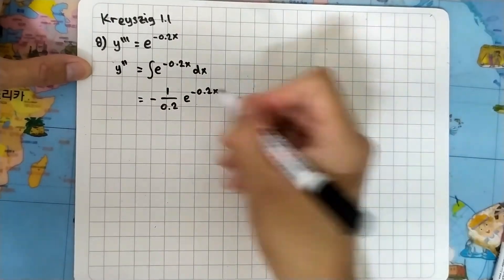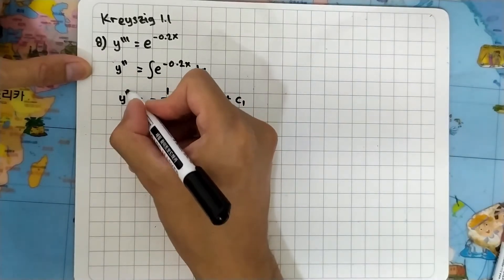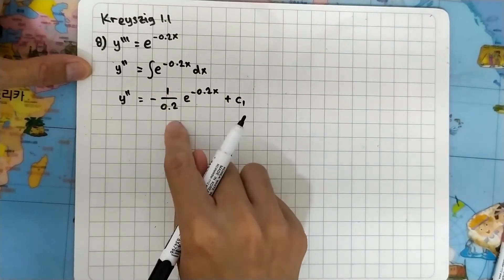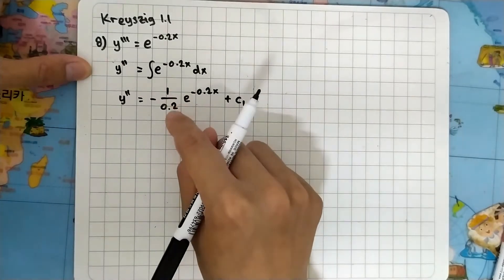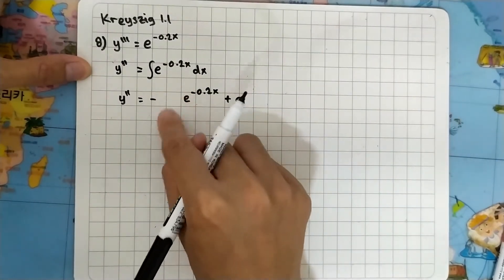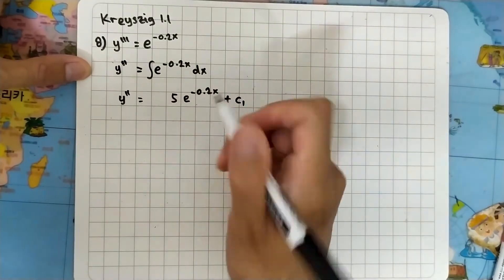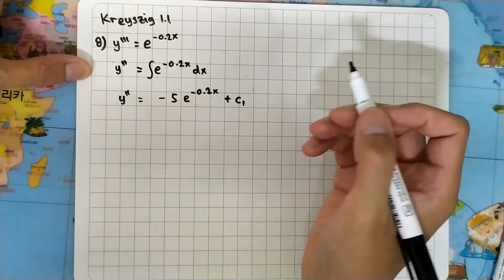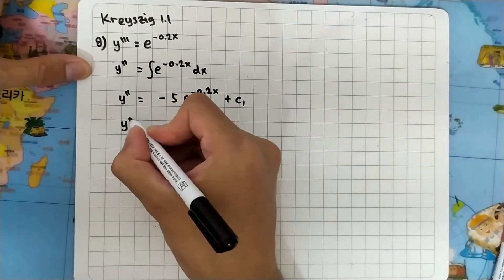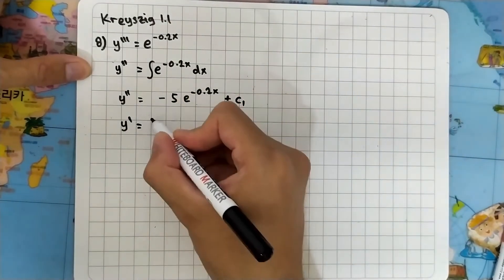So this is y double prime, or 1 divided by 0.2 is 5, so we can rewrite this as minus 5 e to the minus 0.2x plus c1. And then we can integrate both sides here, so I will have integral of this one plus c1 dx.